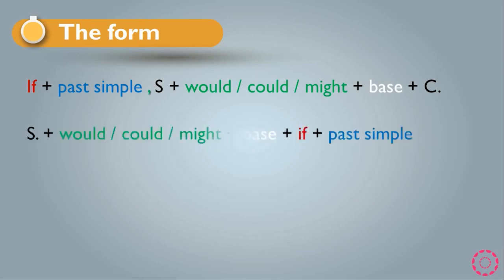When we want to use 'if' in the middle of the sentence, the form is: subject + would, or could, or might, + base form + if + past simple. When we want to use 'if' in the middle, we follow this second rule.